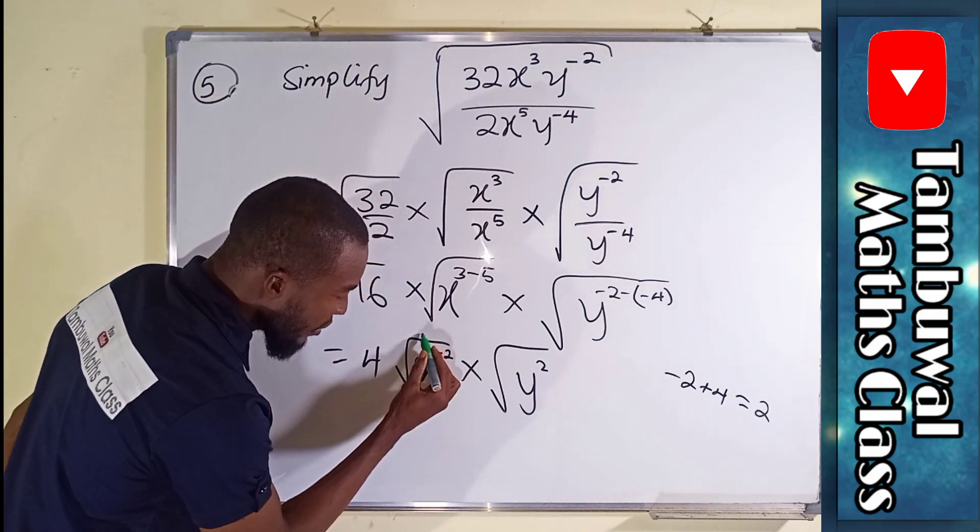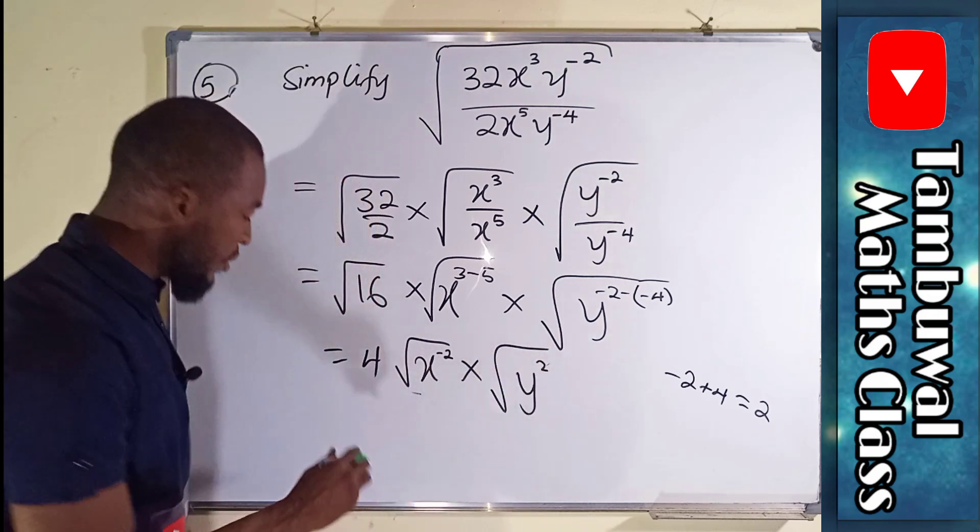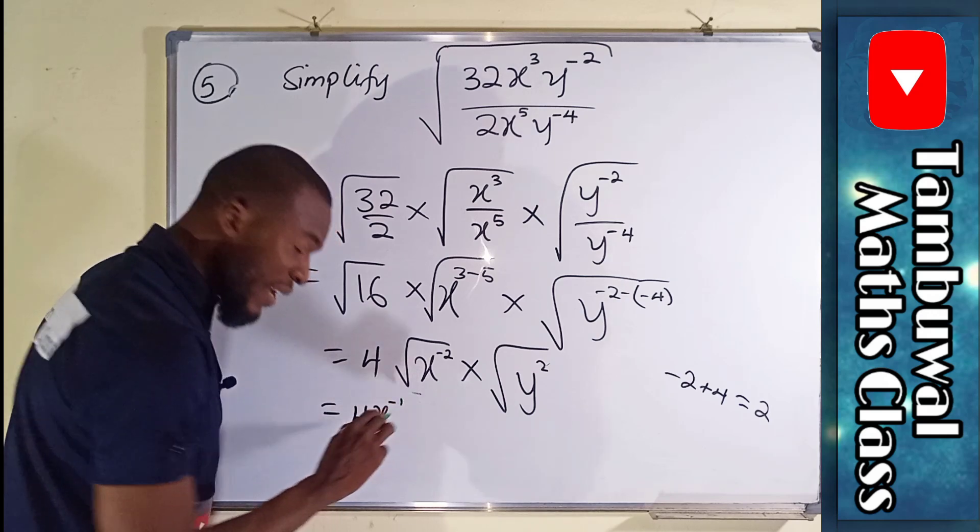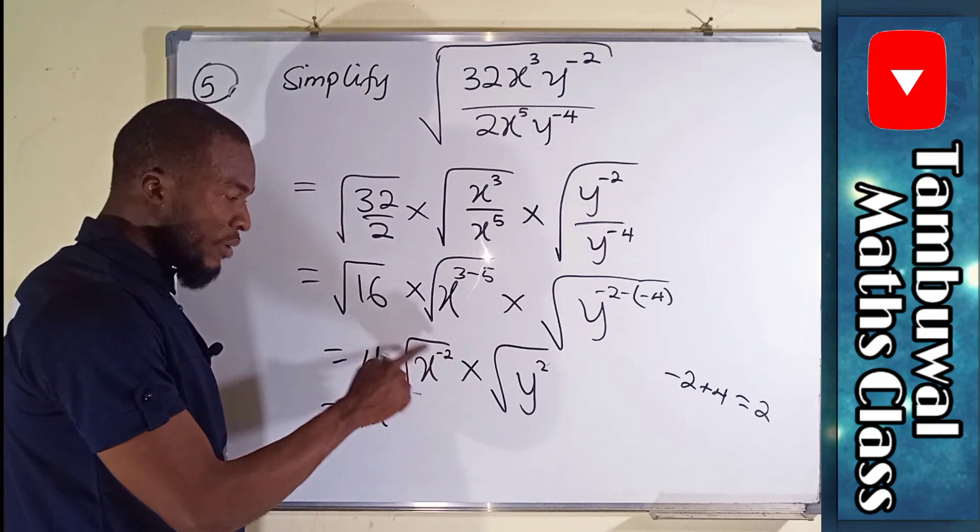Naturally you know power of 2 will eliminate the square root, so this power will cancel this square root, this power will also cancel the square root, and we have 4 times x to the power of negative 1.